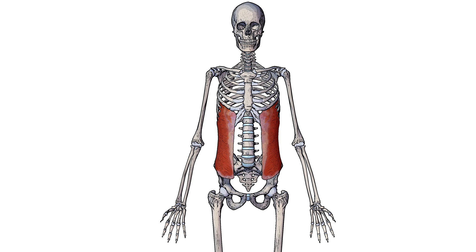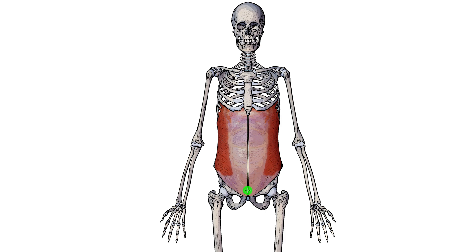Pictured here we can see an isolated view of just the external oblique by itself. As the fibres approach the midline they form an aponeurosis, which is a flat tendon-like material. The aponeurosis then inserts into the linea alba, which is this line which runs down the middle here. Translated from Latin to English, linea alba literally means 'white line.' The linea alba is made of the three aponeuroses of the muscles which form the rectus sheath.